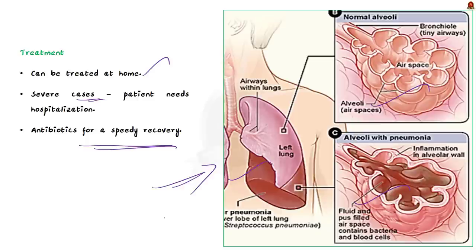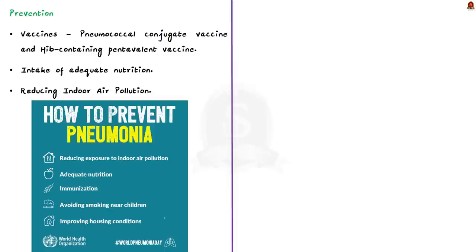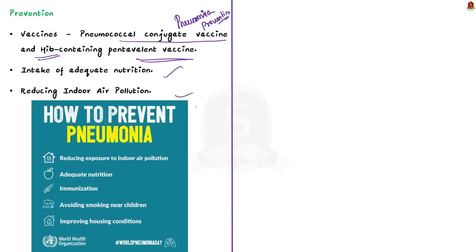Prevention is always better than cure. Vaccines are an important and effective way to prevent both bacterial and viral infections in children and adults. The pneumococcal conjugate vaccine and the Hib-containing pentavalent vaccine are some of the vaccines used in India to prevent pneumonia. Intake of adequate nutrition and reducing indoor air pollution are some of the other measures to prevent pneumonia.